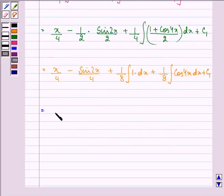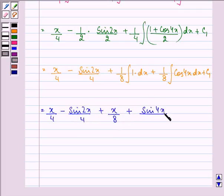Now further we have x by 4 minus sin 2x by 4 plus x by 8 plus sin 4x divided by 8 into 4 plus c1 plus c2.